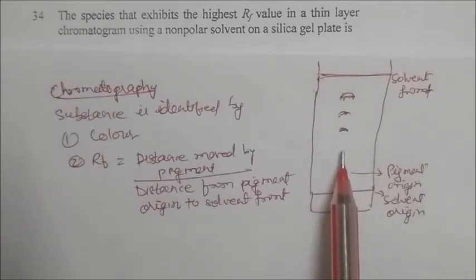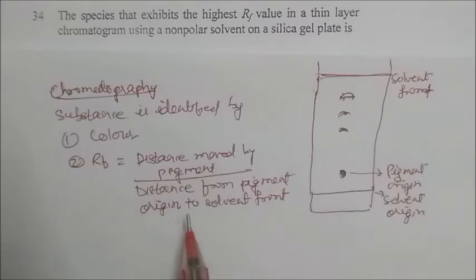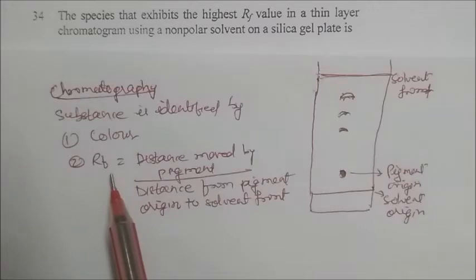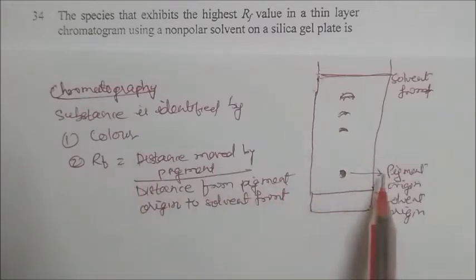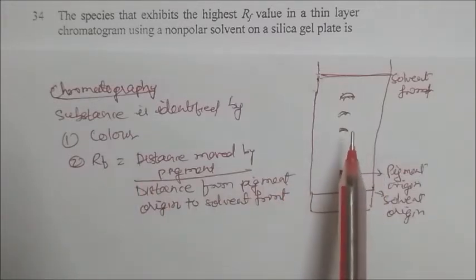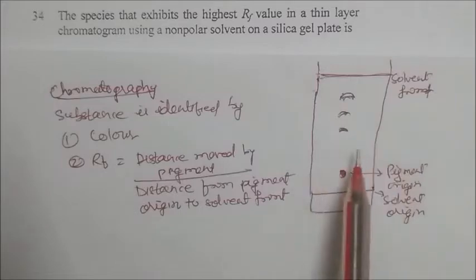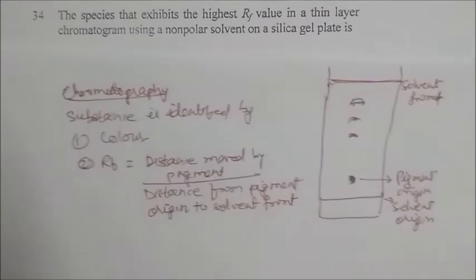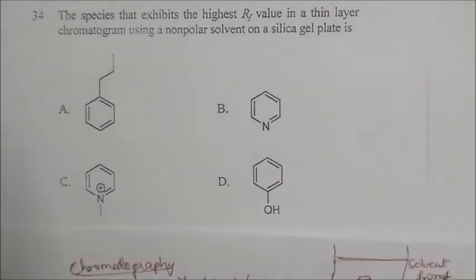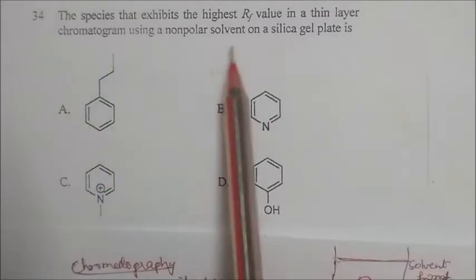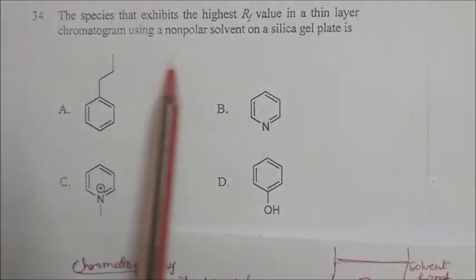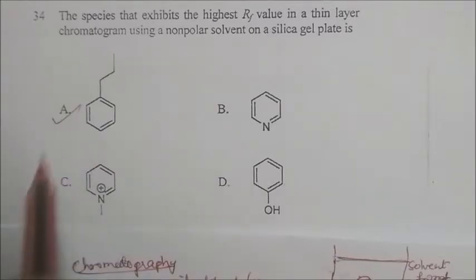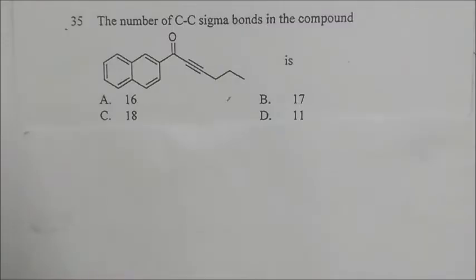If the movement of the pigment is very less, the Rf factor will be maximum. Due to the polarity of silica gel and alumina, a more polar compound will have a lower Rf. With a non-polar solvent, the highest Rf value will be for the non-polar compound, so the answer is A.